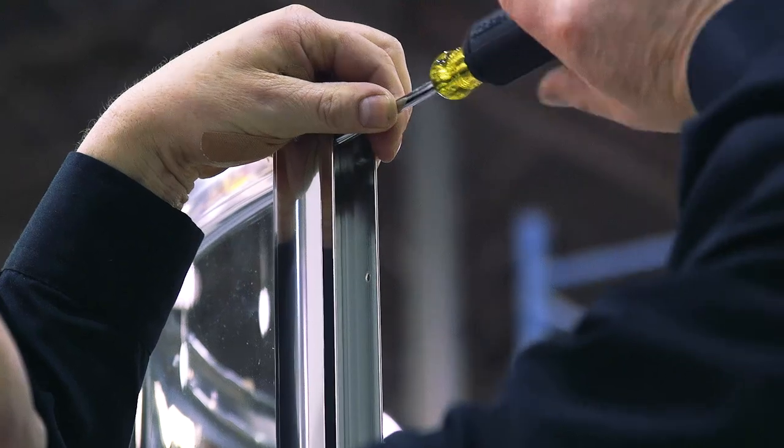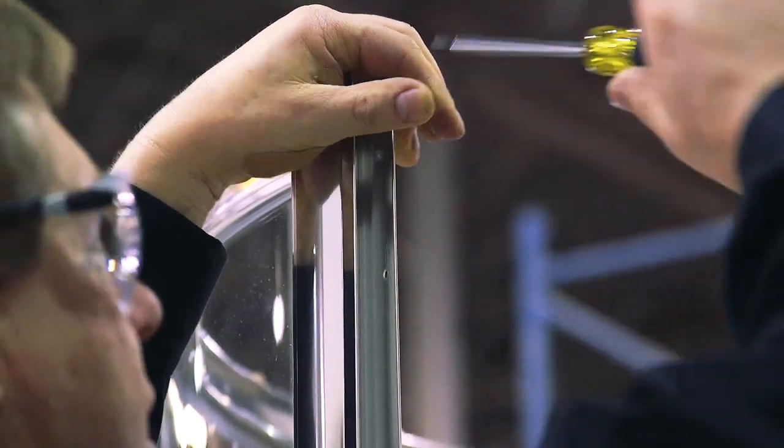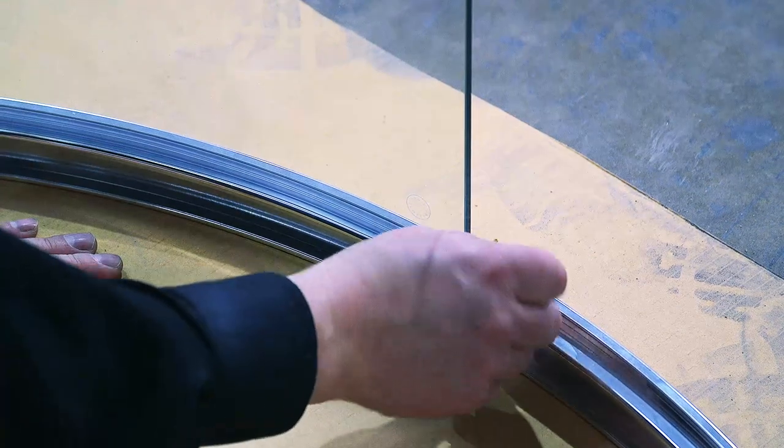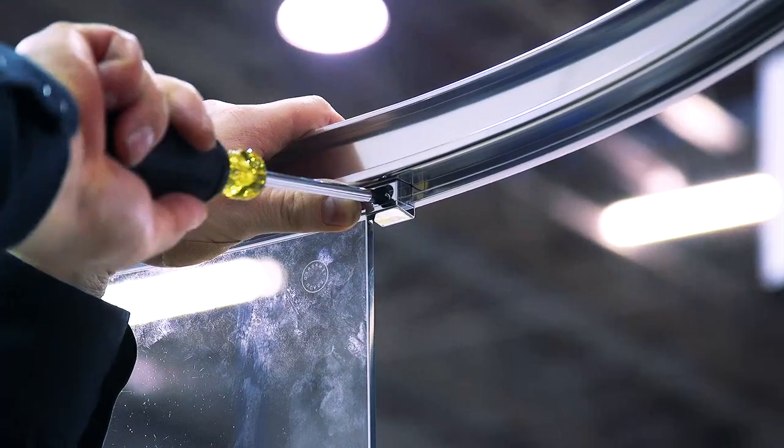Next, use four M4 x 35 screws to attach the top horizontal rail to the posts. Using the M4 x 12 screws, secure the two glass clips to the top and bottom horizontal rails.